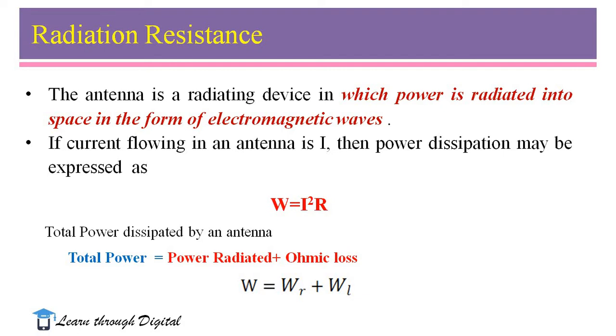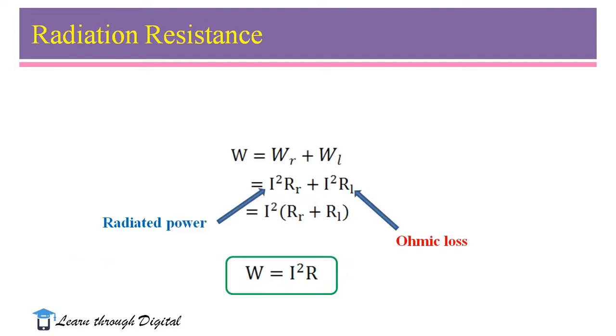Next one is due to power loss, that is RL. RL is the loss resistance. A fraction of power getting lost due to RL. Therefore, the total power is sum of the power radiated and ohmic loss.